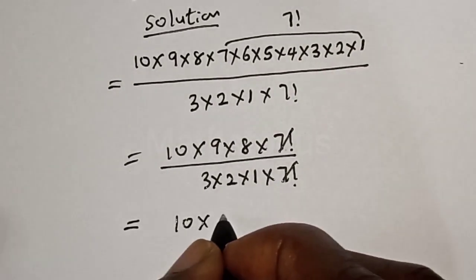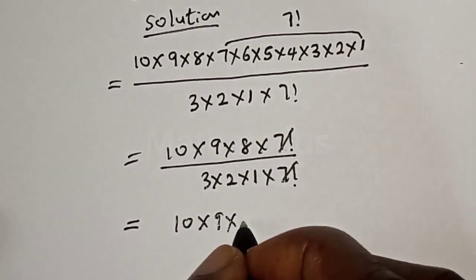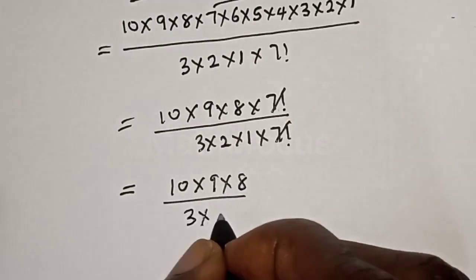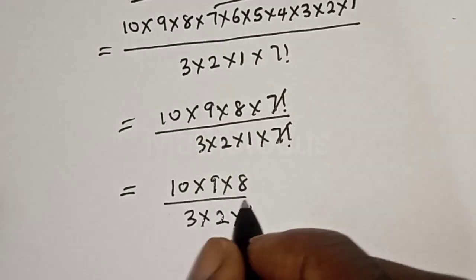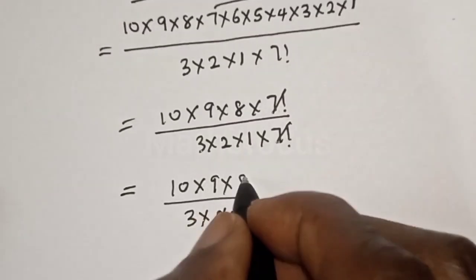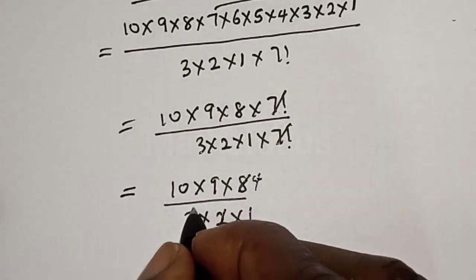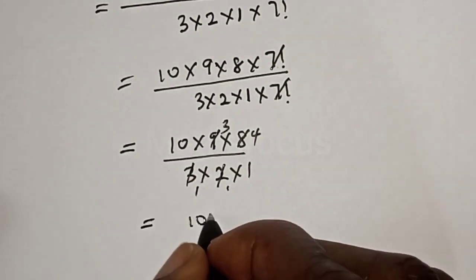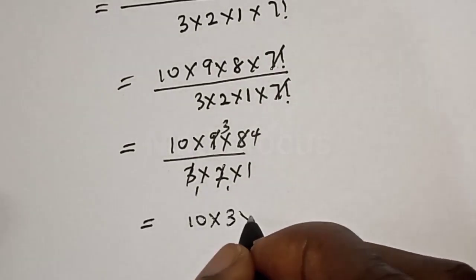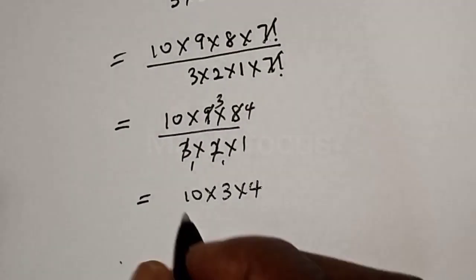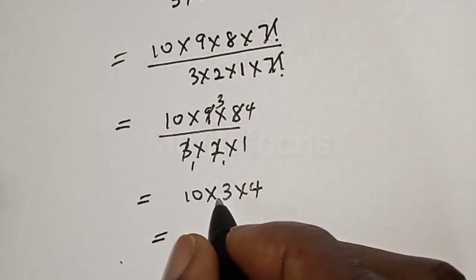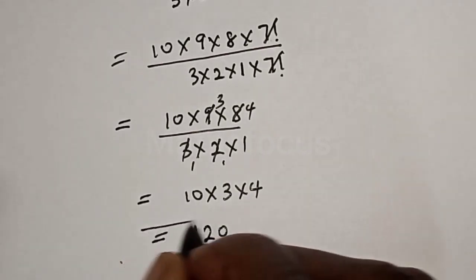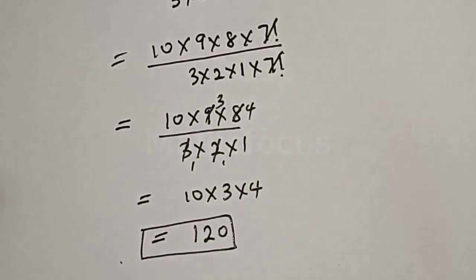We are left with 10 times 9, times 8 over 3 times 2 times 1. Simplifying: 2 cancels to give 4, 3 cancels, leaving 10 times 3 times 4, which equals 30 times 4, giving us 120.